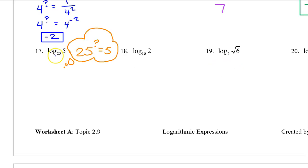For number 17, we are asking ourselves 25 to what power will equal 5? The answer is 1 half. Remember that 25 to the 1 half power is the same thing as the square root of 25. So that's why this gives us 5. So yes, the exponent that turns 25 into 5 is 1 half.